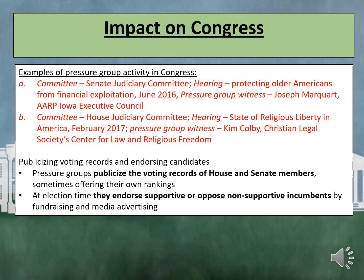Now let's look at an example from the House, looking at the House Judiciary Committee. The hearing is 'The State of Religious Liberty in America,' which was held in February 2017. At this hearing, the pressure group witness Kim Colby of the Christian Legal Society Centre for Law and Religious Freedom was called. Another way pressure groups can seek to influence House and Senate members is by publicising voting records and endorsing candidates. Pressure groups publicise the voting records of members, sometimes offering their own rankings. At election time, they endorse supportive or oppose non-supportive incumbents through fundraising and media advertising.